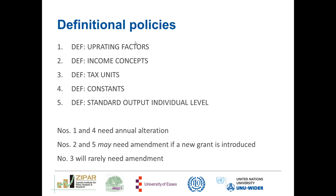We start off by looking at our definitional policies, and in MicroZAMOD we have five definitional policies: uprating factors, income concepts or income lists, tax units, constants, and our last definitional policy is our standard output at the level of the individual. Our operating factors and constants may need annual alteration. Our income concepts and standard output may need amendment but only if a new grant is introduced. And our tax units definitional policy will rarely need amendment.